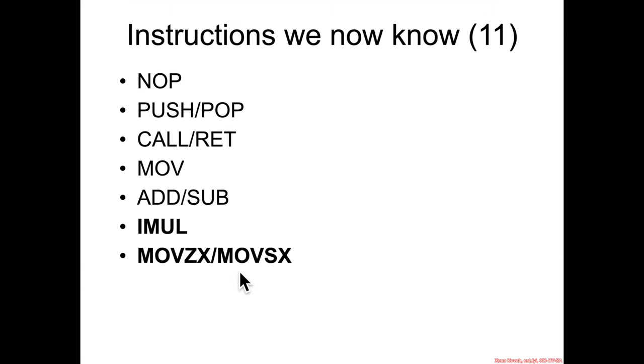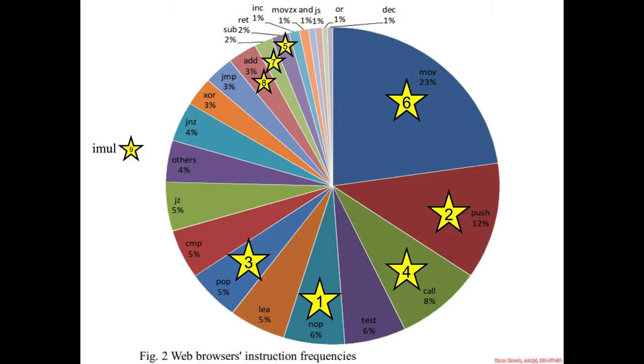So we just added three new assembly instructions: IMUL, move with zero extension, and move with sign extension. Where are they on our pie? Well, IMUL is in others because it doesn't get its own slice - not common enough. But move with zero extension is right here coming in at one percent, and move with sign extension not enough, at least in this particular compiled version. So we picked up our first others and there are many more to come.